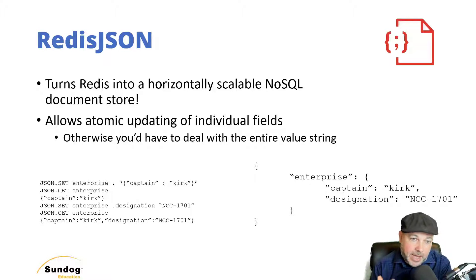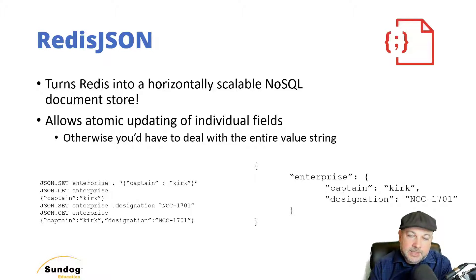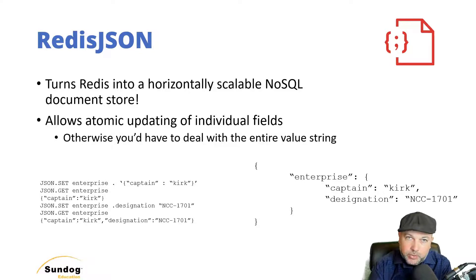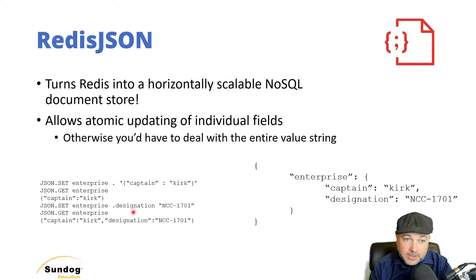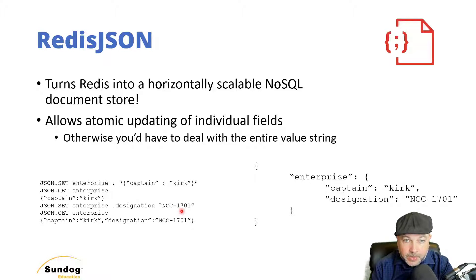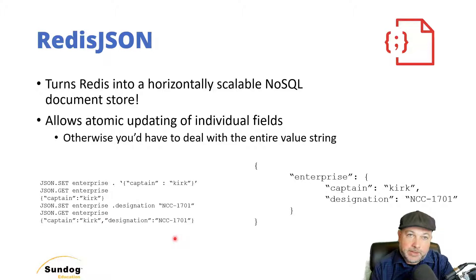I can get that data back very quickly using JSON.get Enterprise — Captain Kirk is what comes back, as expected. Now if I want to add new data to that structure, I can do that with one line as well without having to retrieve the whole thing first. I can say JSON.set Enterprise.designation and give it a value of NCC-1701. Now I've built up my whole structure. I can say JSON.get Enterprise again and get back the complete structure: Captain Kirk, designation NCC-1701.